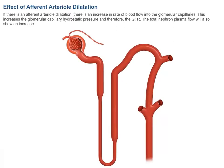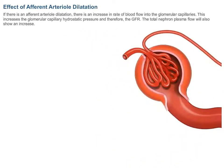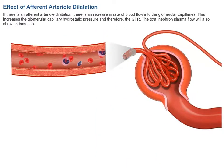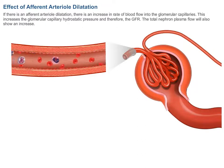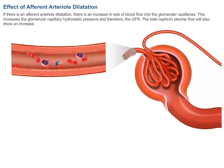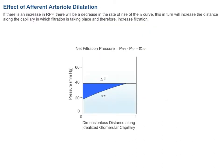Effect of afferent arteriole dilation: dilation of the afferent arteriole increases the rate of blood flow into the glomerular capillaries, raising the glomerular capillary hydrostatic pressure and therefore the GFR. The total nephron plasma flow also increases. An increase in renal plasma flow (RPF) decreases the rate of rise of the oncotic pressure curve, which increases the distance along the capillary in which filtration takes place, further increasing filtration.